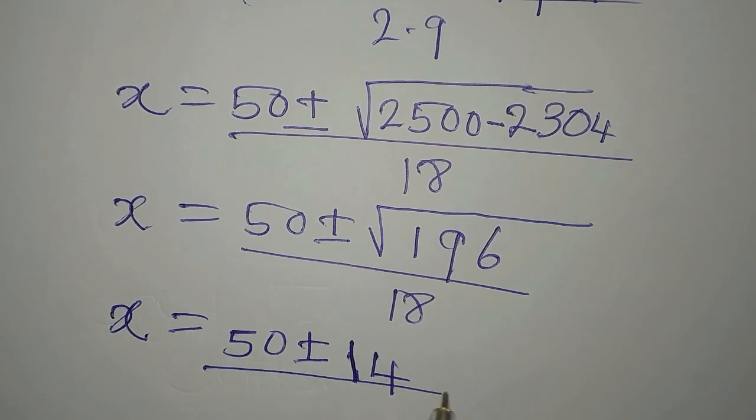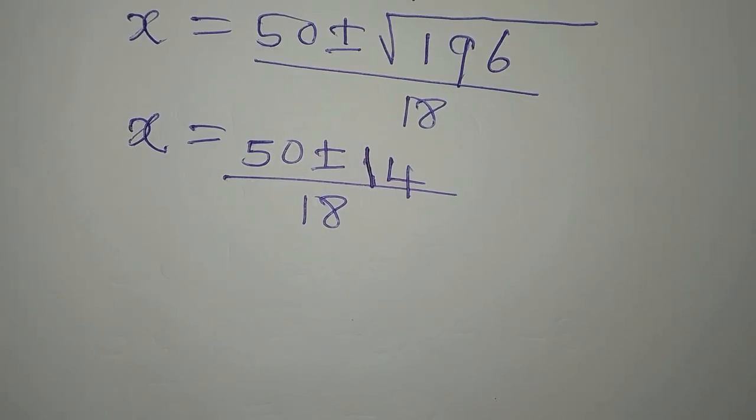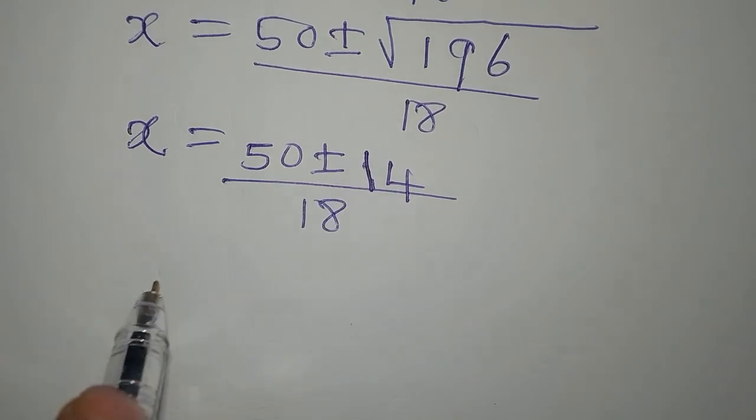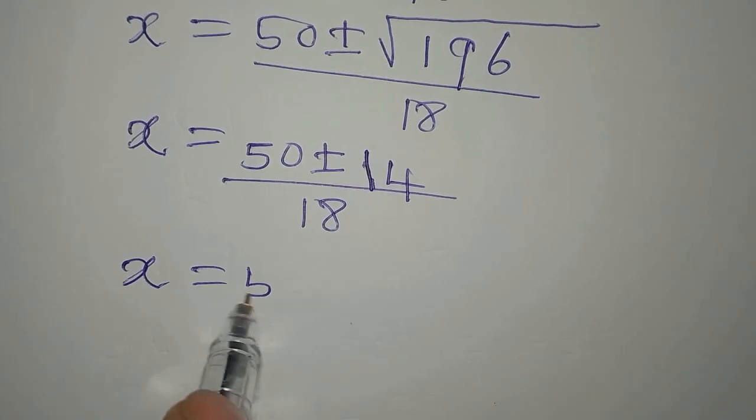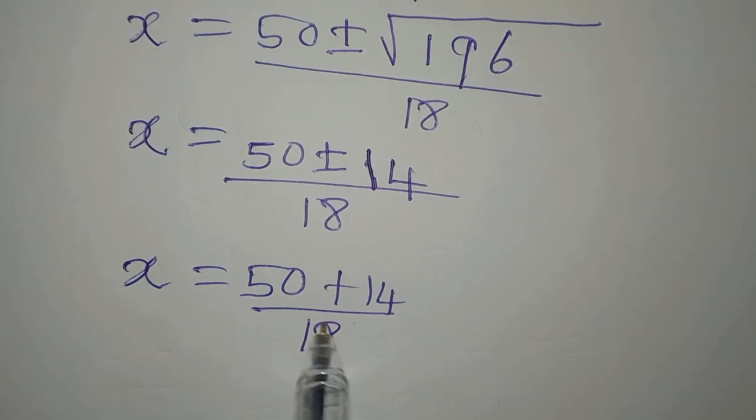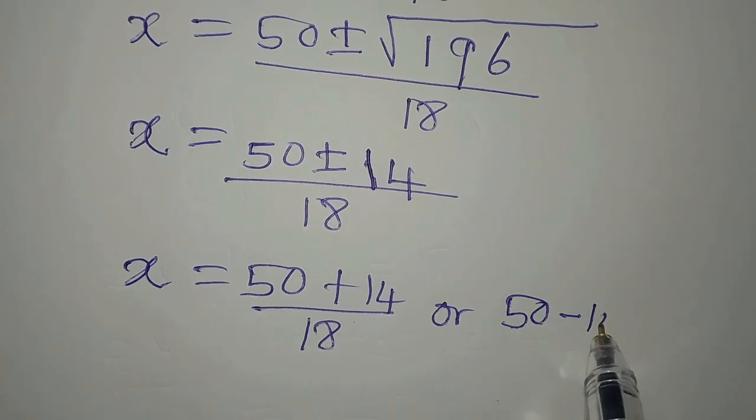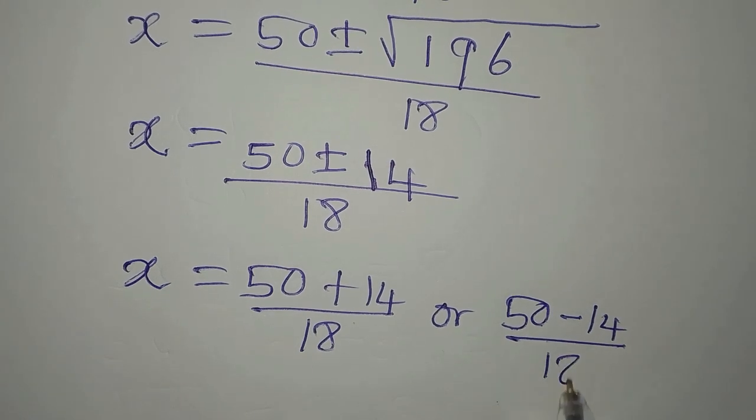So we divide this by 18. This is plus or minus, which means that our x is 50 plus 14 over 18, or 50 minus 14 over 18.